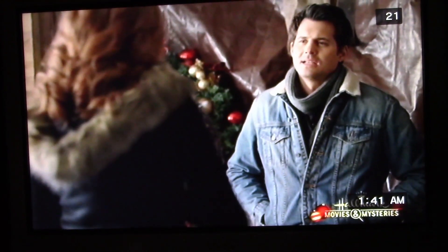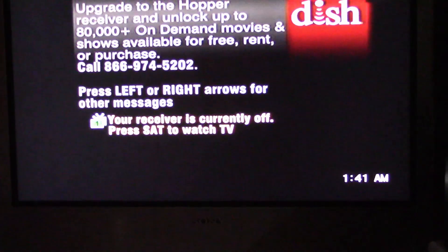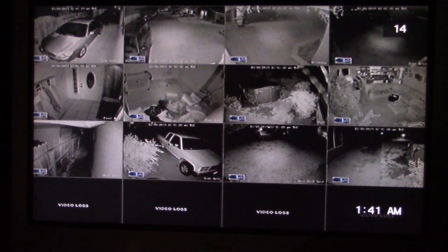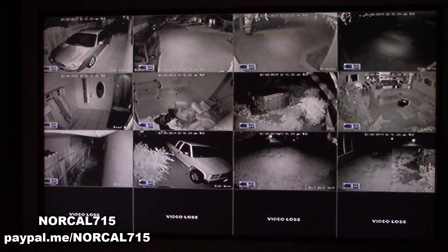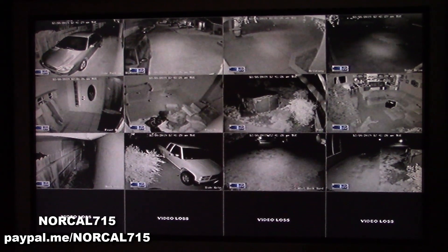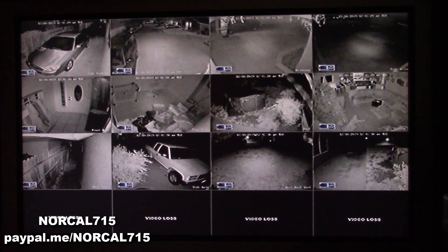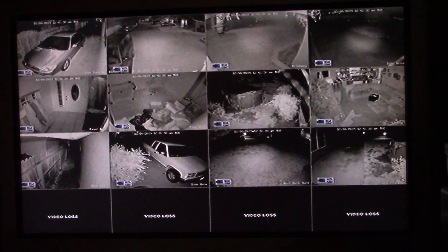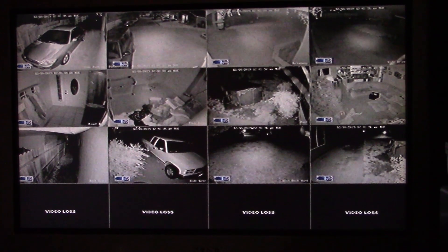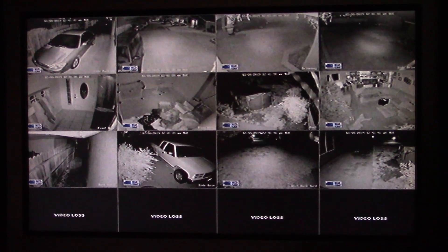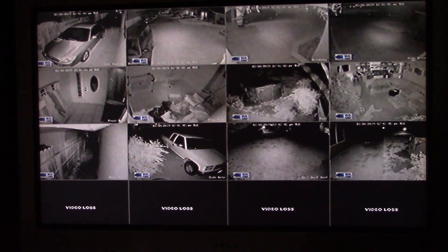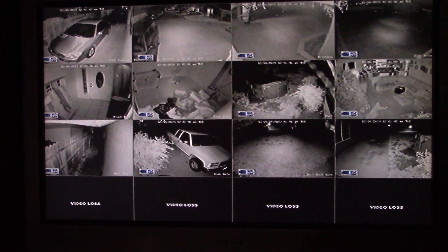I certainly hope you enjoyed this video on repairing the Dish Network VIP-722K receiver for no RF output. If this video has helped you, please consider making a donation on my YouTube homepage with the PayPal donate button or at paypal.me slash norcal 715. Don't forget to subscribe, like, and ring that bell to get future notifications. Remember, with your help, we can keep these things out of the landfill and out of the recycle bin. Everybody, have a great day. Thanks for watching. Bye-bye.